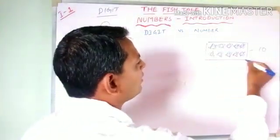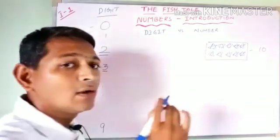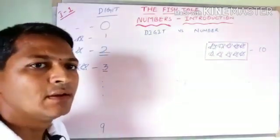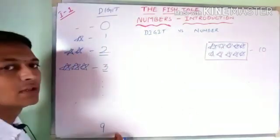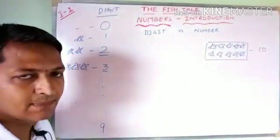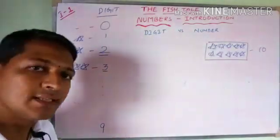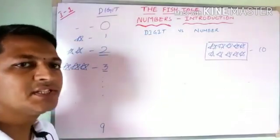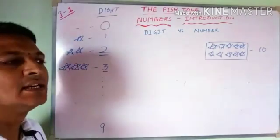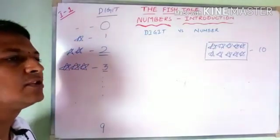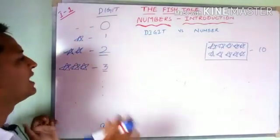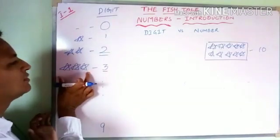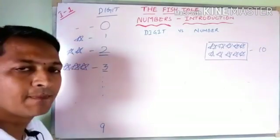A number is formed by the combination of two or more digits. What is a digit? A digit is the single numerical symbol that we have assigned to a fixed number of quantities.